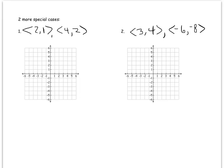We're going to look at two more special cases involving the dot product, and I'll show you how to use the formula in general. Here are two vectors — let's say we want to find the angle between them: (2, 1) and (4, 2). When we graph them, 2,1 looks like this, and 4,2 looks like this — kind of right on top of each other.